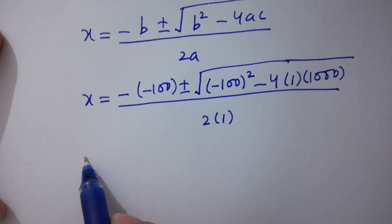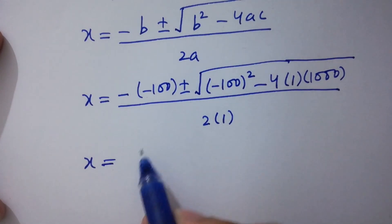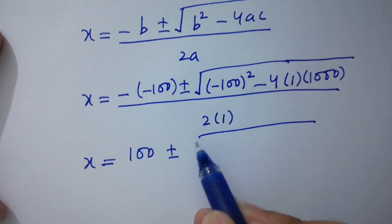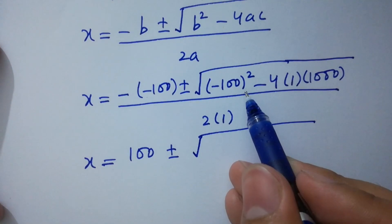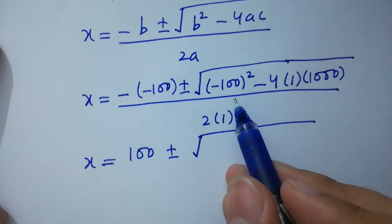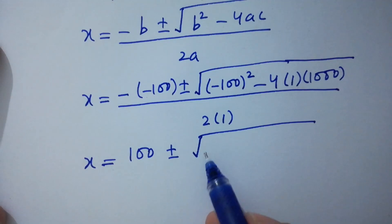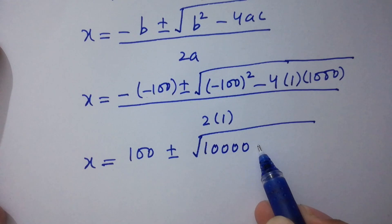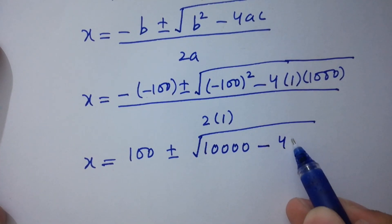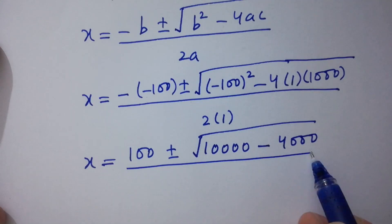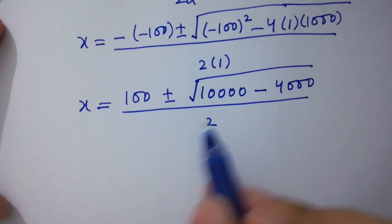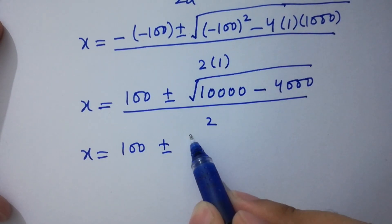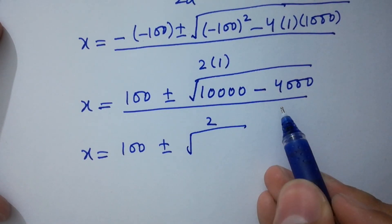So x equals 100 plus or minus square root of 100 squared minus 4 times 1 times 1000, which gives square root of 10000 minus 4000, over 2.